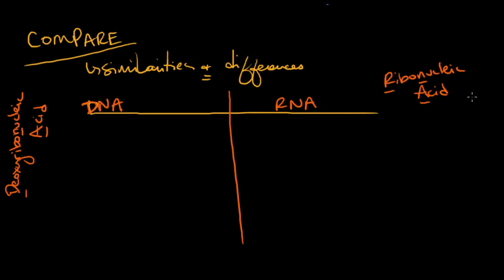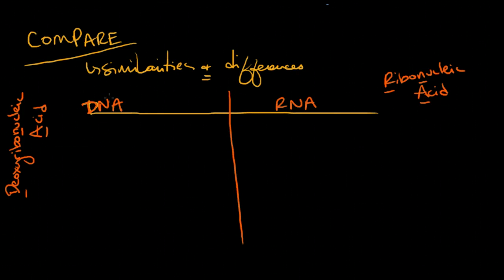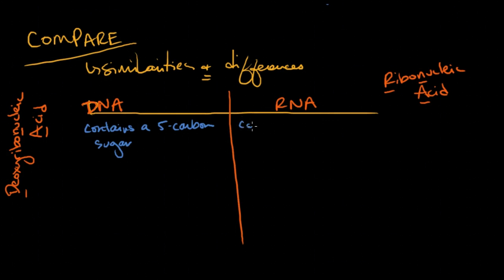Alright, so these are both nucleic acids, which is the fourth category of organic molecules. So you've learned about proteins, you've learned about carbs, you've learned about lipids. And this is the fourth category of nucleic acids. One of the similarities is that DNA contains a 5-carbon sugar. RNA also contains a 5-carbon sugar.